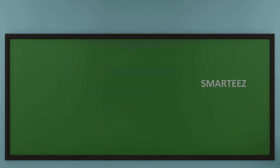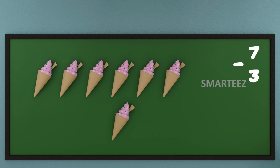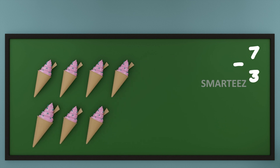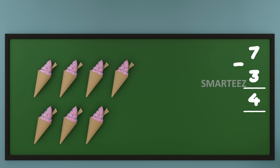Now, let's see what happens when we have a total of seven ice creams and we subtract three ice creams from it. Take a look. That's seven ice creams in total. Let's subtract three ice creams out of it. That's one, two, and three ice creams. What we have left is one, two, three, and four ice creams. I know you're already thinking about the ice creams. Ice creams are real yummy, isn't it?